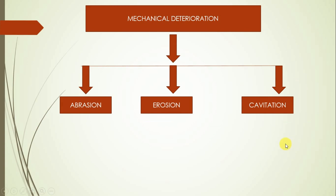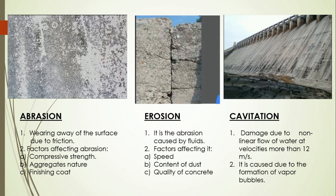The mechanical deterioration methods include three methods: abrasion, erosion, and cavitation. Abrasion refers to wearing of the surface by friction. Erosion refers to the same wearing action by fluids. Cavitation refers to damage due to non-uniform flow of water at velocities more than 12 meters per second. Cavitation takes place mainly at the spillways of dams, abrasion on terrace surfaces, and erosion on structures built near rivers.